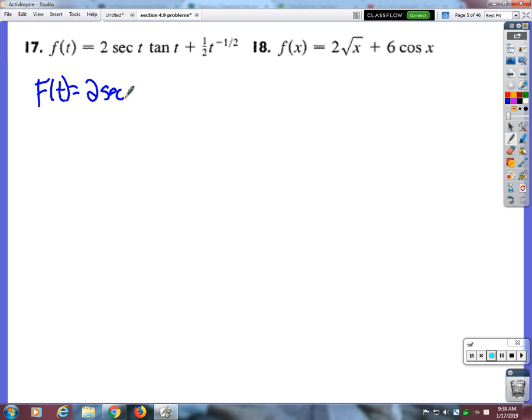Secant. So since the derivative of secant is secant tangent, the anti-derivative of secant tangent is secant. Yeah. Okay, Gauge, you want to take what? This one from us? No. All right, who's got the anti-derivative of one-half t to the negative one-half? So no sir, we're adding one, so negative one-half plus one is positive one-half divided by...